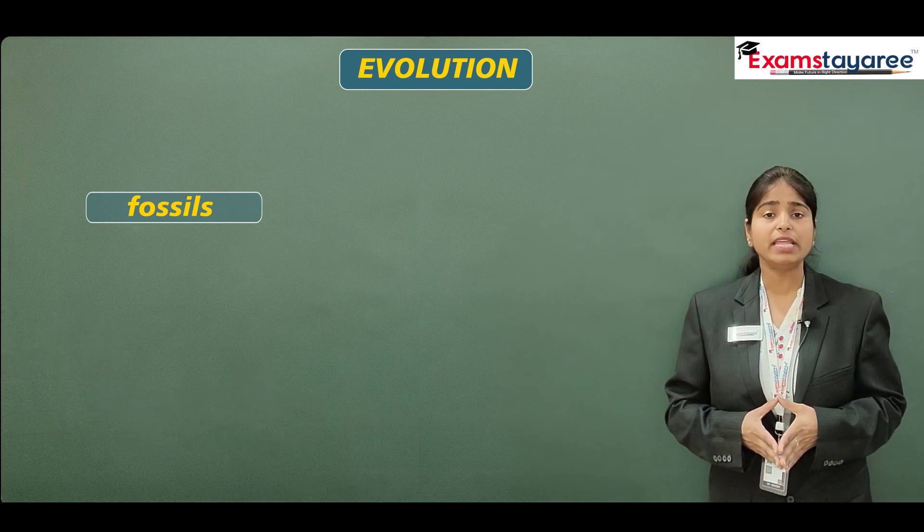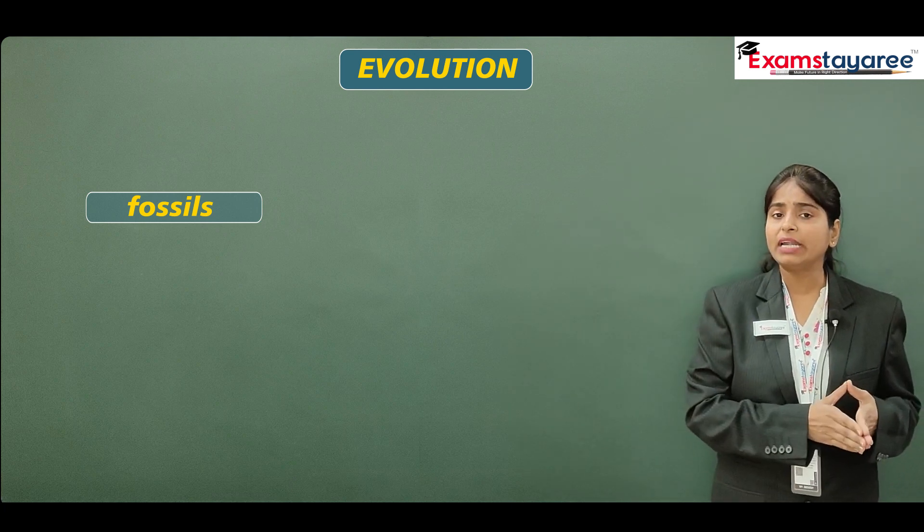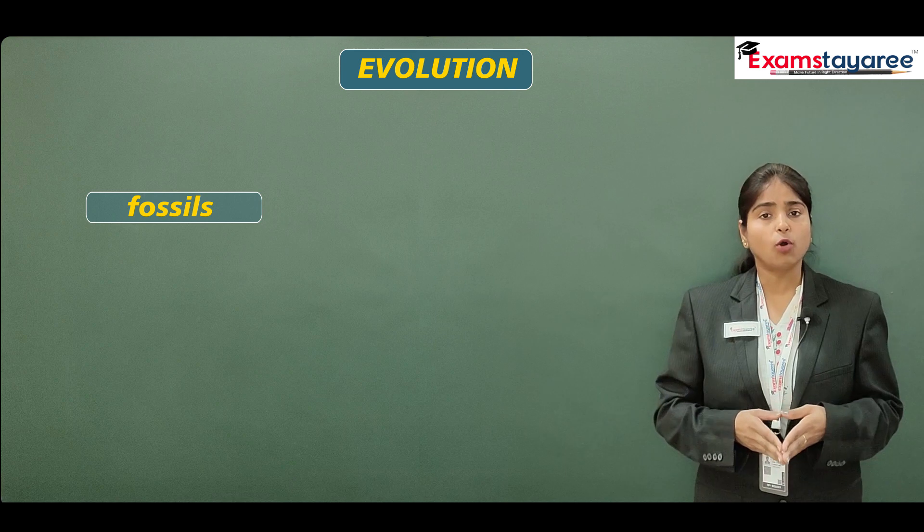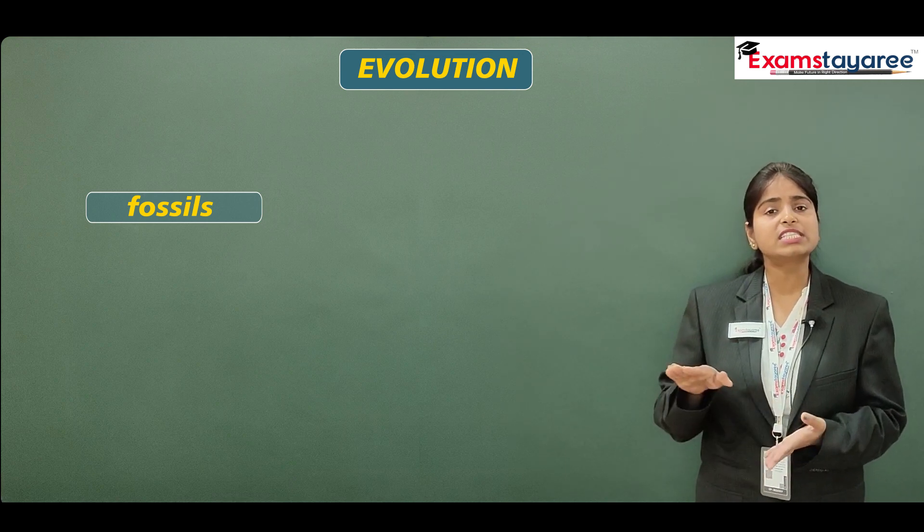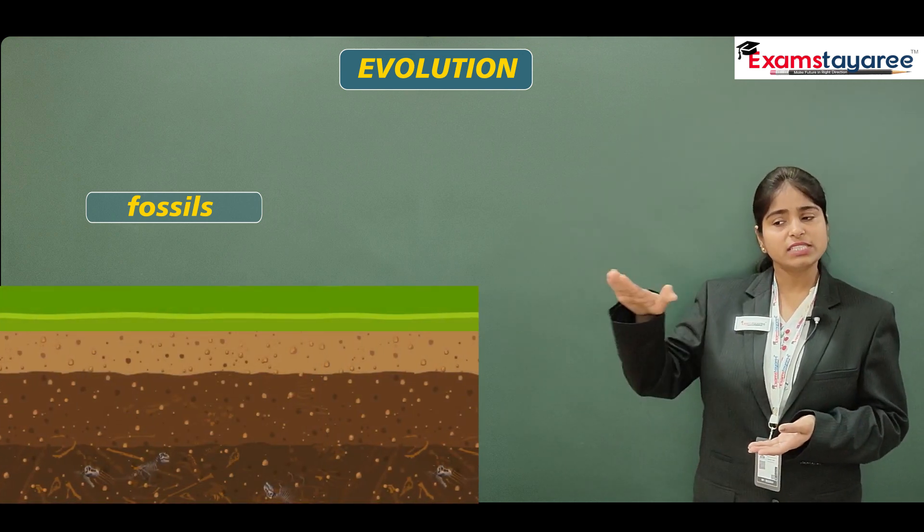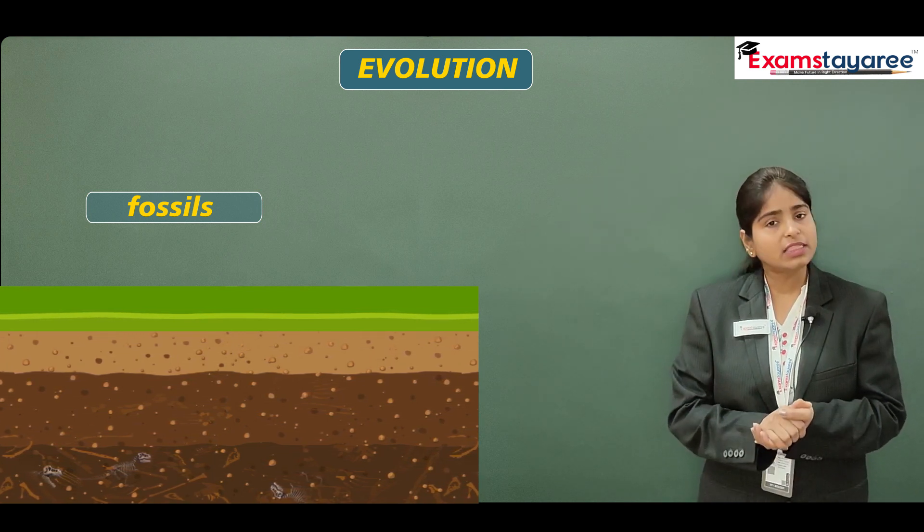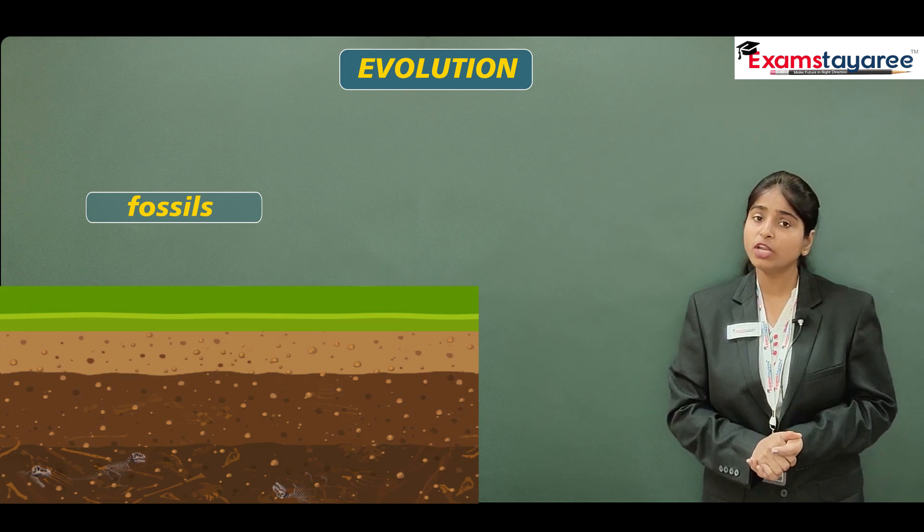Fossils form kaise ho jate hai? Jab kisi bhi plant ya animal ki death ho jati hai, after the death, they got buried under the surface of the earth. Unke layer per layer, layer per layer, jab soil ki padti hai, tab in fossils ka formation hota hai.